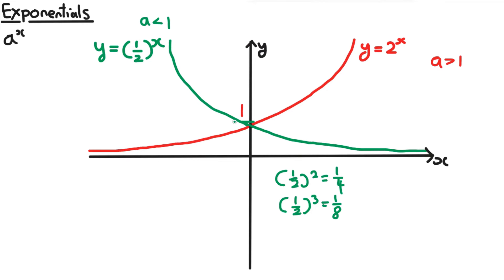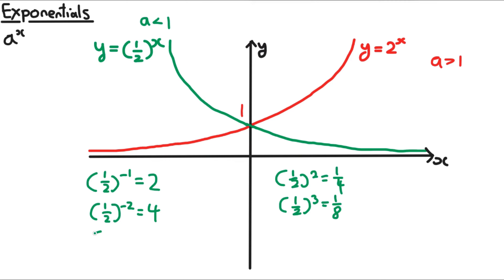When x gets more negative, a half to the power of x actually gets bigger, because of how fractions work with their powers. A half to the power of minus 1 flips the fraction to 2; a half to the power of minus 2 flips and squares it to 4; and a half to the power of minus 3 flips and cubes it to get 8.